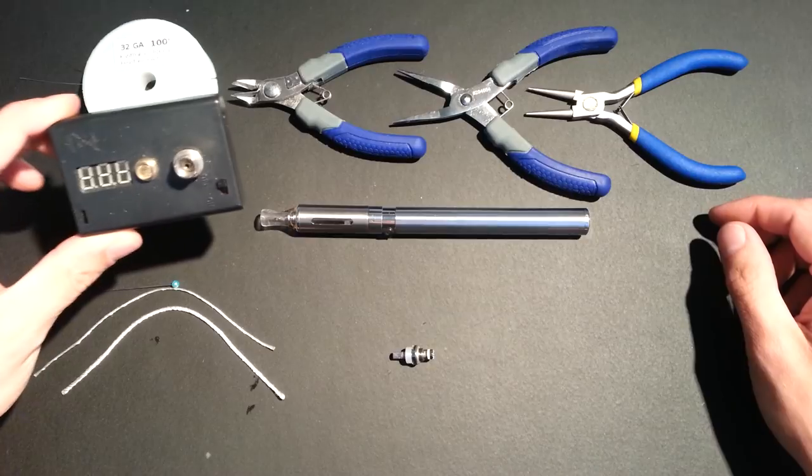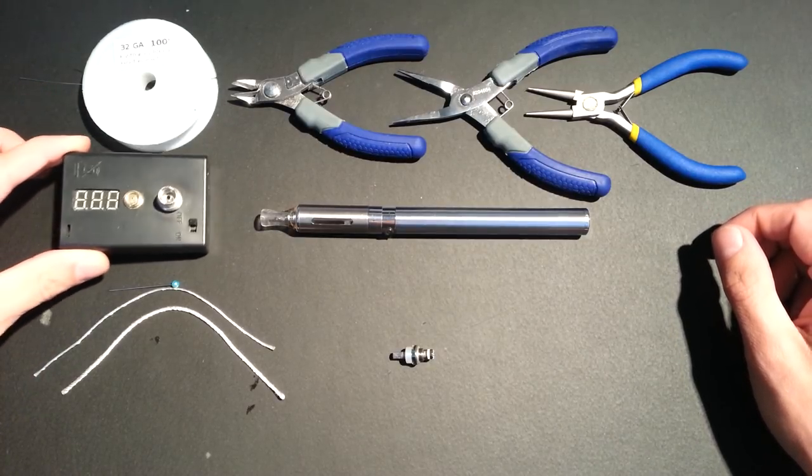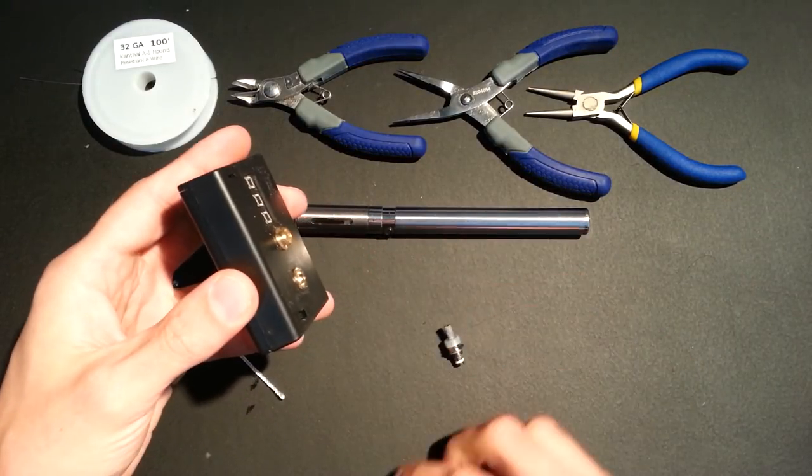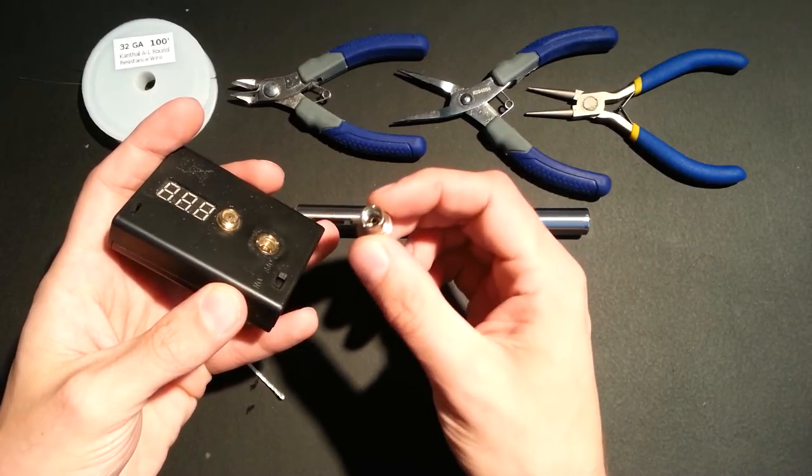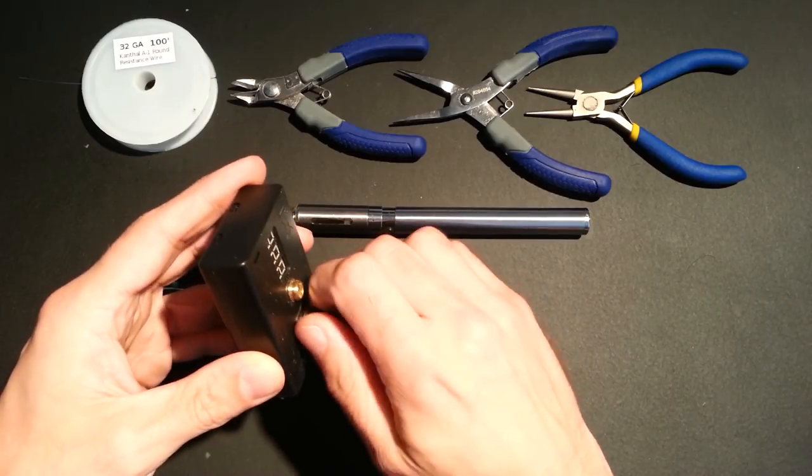We'll be using the resistance meter that I got from madvapes.com for about $20. This thing rocks. If you don't have one, get one. And then we have the ego battery to atomizer adapter. So that's kind of essential. It does not come stock with one of those.